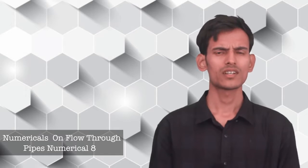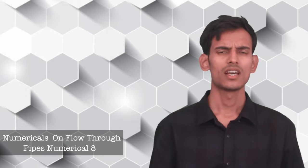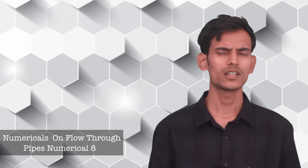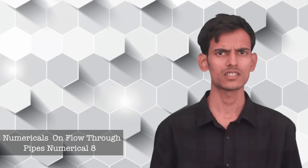We've already seen the theory part of flow through pipes and different types of losses - major losses and minor losses. Now let's do a few numericals and try to understand how the formulas are related. We'll calculate the losses of head in different cases, both minor and major losses.